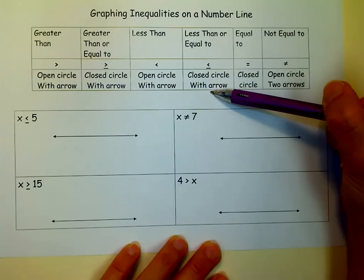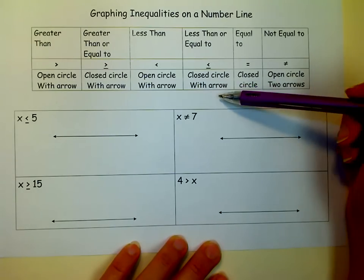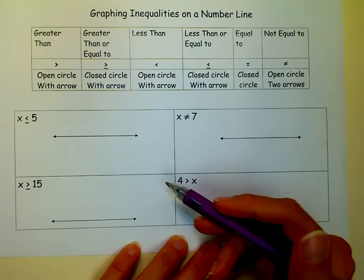So I just made this little chart in case you get confused about when to have an open circle, when to have a closed circle, which way the arrows go. It doesn't really tell you which way the arrows go yet, but sometimes there are two arrows, and sometimes there's one arrow. So let's get started.